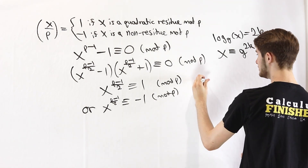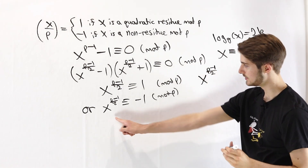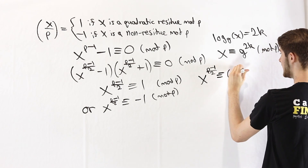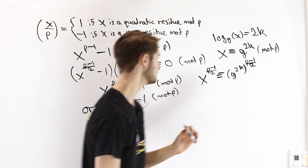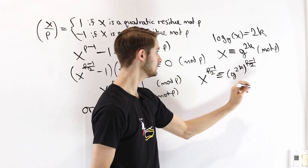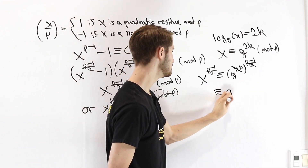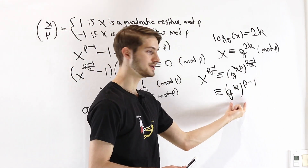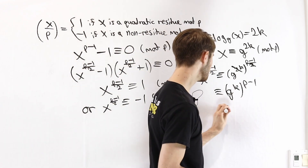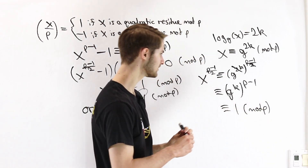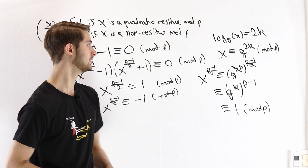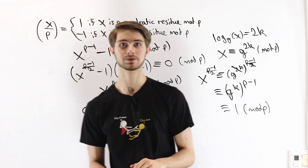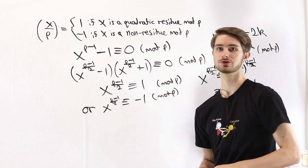Let's look at what happens when we take x to the power of (p-1)/2. We substitute g^(2k) in for x, giving g^(2k) to the power of (p-1)/2. The 2 in the exponent and the division by 2 cancel out, leaving g^k to the power of p-1. By Fermat's Little Theorem, any number mod p raised to the p-1 is congruent to 1 mod p. So if x is a quadratic residue, x^((p-1)/2) ≡ 1 mod p.